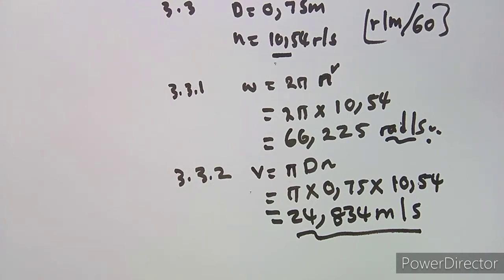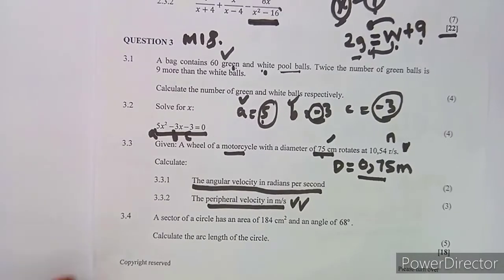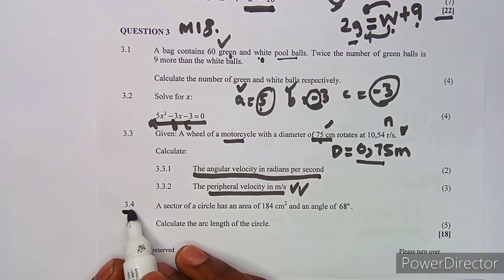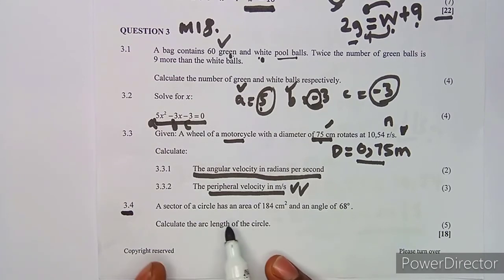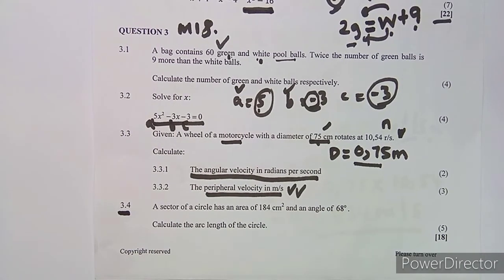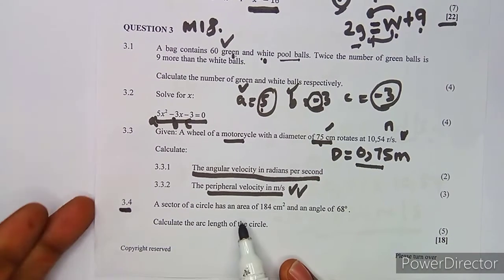It's very important to combine your working knowledge with the formula sheet provided. Moving to question 3.4: a sector of a circle has an area of 184 cm² and an angle of 68°. We need to calculate the arc length.